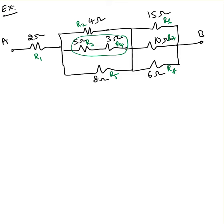Are there any resistors in parallel? These three kind of look like they're in parallel, but I'm not a hundred percent sure, because it looks like this is a different node, different node, different node. But at the same time, is there any element between these two nodes? No element — so I can say that's the same node. Same thing here, that's the same node. To make it easier, I'm going to redraw the circuit.